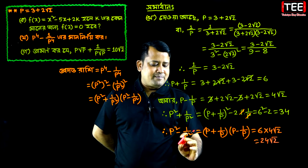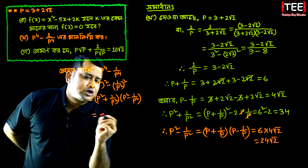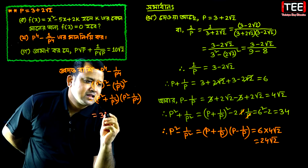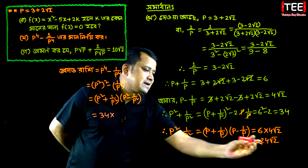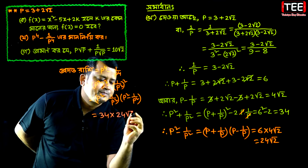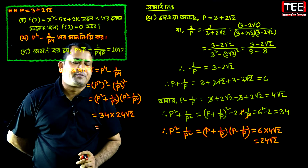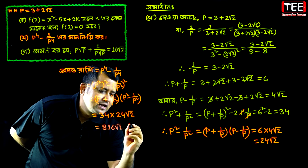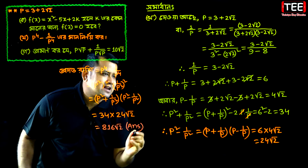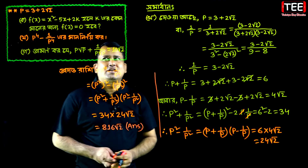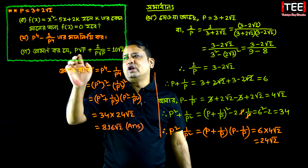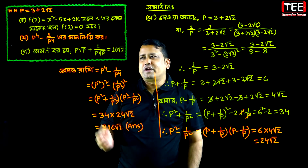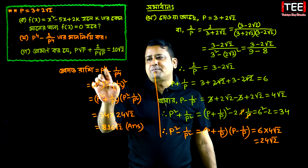We get 24 root 2. Then 24 plus 1 by 24 minus 34, and 24 minus 1 by 24 gives 24 root 2. The answer is 816. The answer is p equals 3 plus 2 root 2, and p to the power 4 minus 1 by p to the power 4 equals 816.